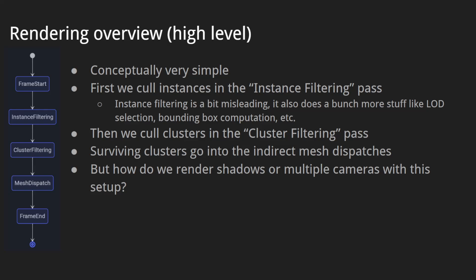Here is our high-level rendering overview — it is very simple conceptually. We start the frame, then cull instances in the instance filtering path. Instance filtering is a bit of a misleading name because it also does more things like level of detail selection and computing the final bounding box for each instance. Then we cull clusters in the cluster filtering path, and surviving clusters go into the indirect mesh dispatches.